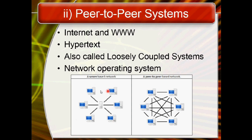In a peer-to-peer system there is no central server — all nodes are treated the same and are called peers. Data can be transferred directly between any nodes. The best example of a peer-to-peer system is the internet and the World Wide Web, where clicking a hypertext link opens the next page. Peer-to-peer systems are also called loosely coupled systems. For such networks there is a special operating system called a network operating system.